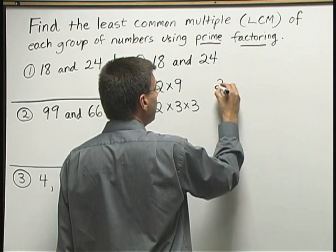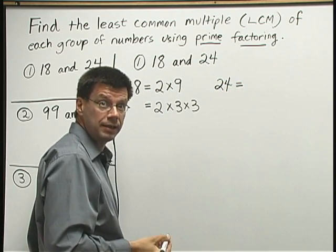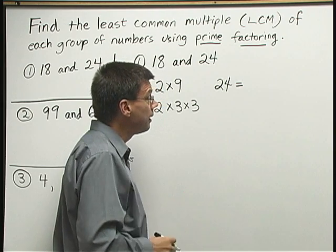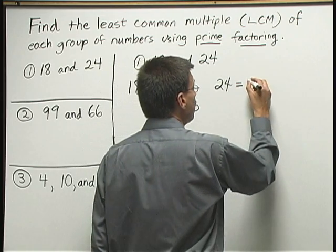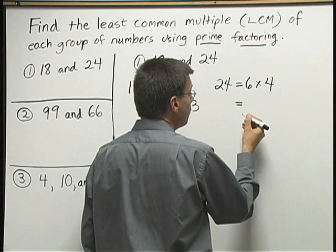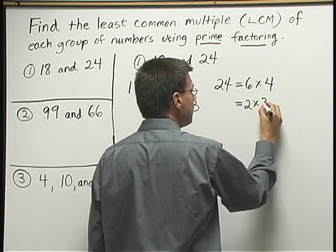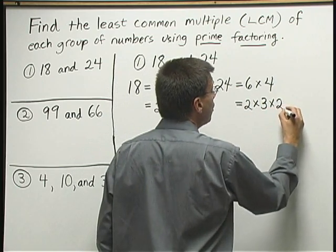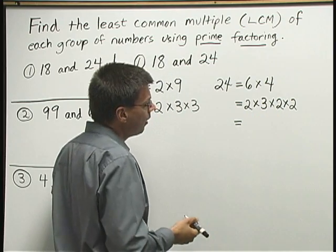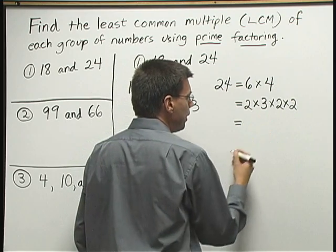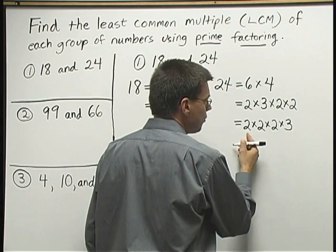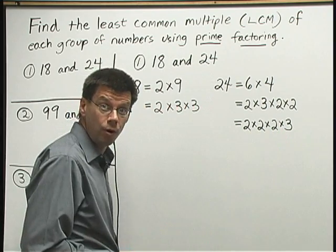Now I take my other number, 24, and I want to break down 24 as a product of primes. There are many ways to get started — I just need to pick one. One way would be 6 times 4. I can break down 6 as 2 times 3, and the 4 as 2 times 2. I have all prime numbers now. I'll write one more line putting the numbers in order: 2 times 2 times 2 times 3 — that is 24 written as a product of primes.